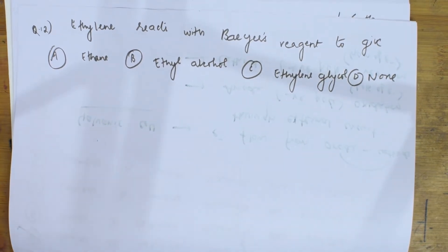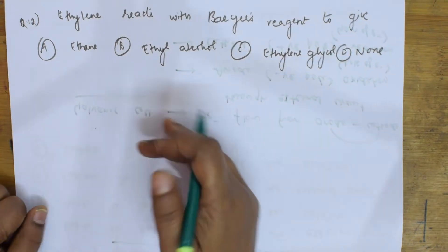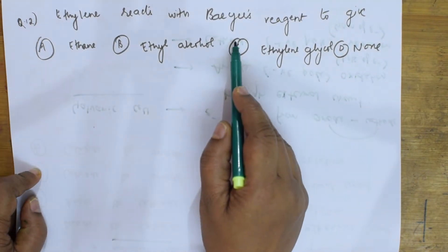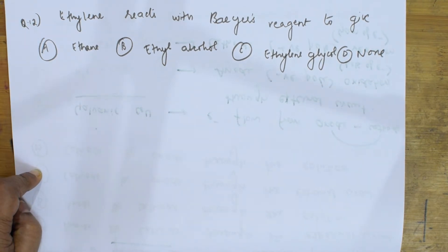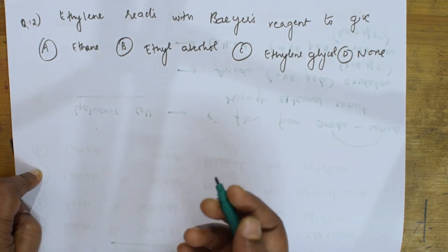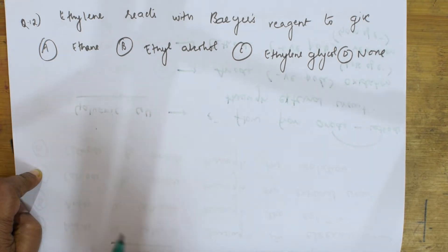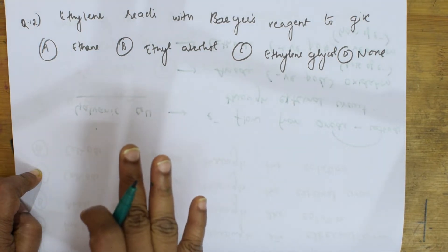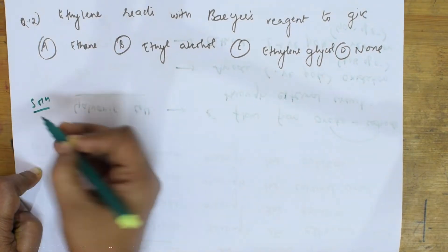Here they have given one organic reaction. Let us see this. They said ethylene reacts with Bayer's reagent to give what? So ethylene reacts with Bayer's reagent. Basically, this is preparation of alcohols from alkenes. This is a basic concept. Let us write the reaction first and see what product we get.